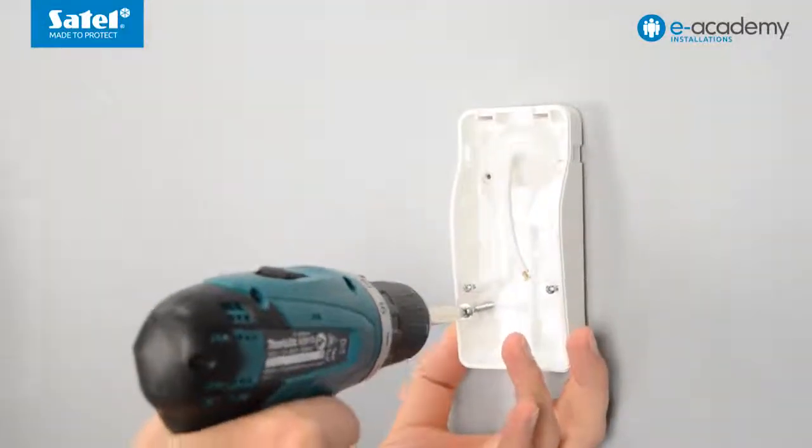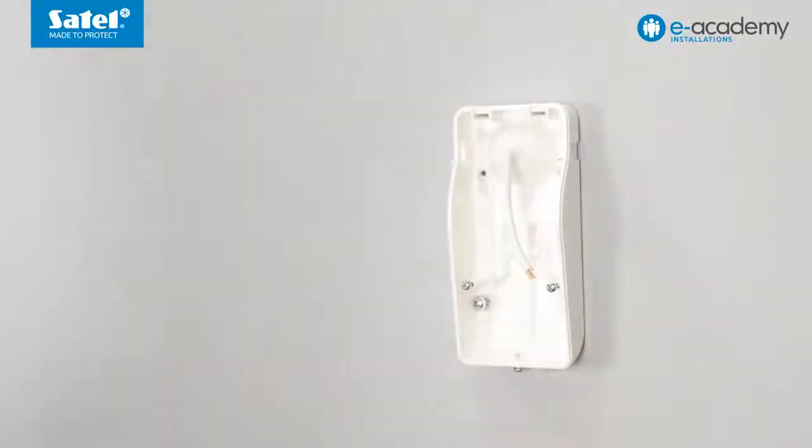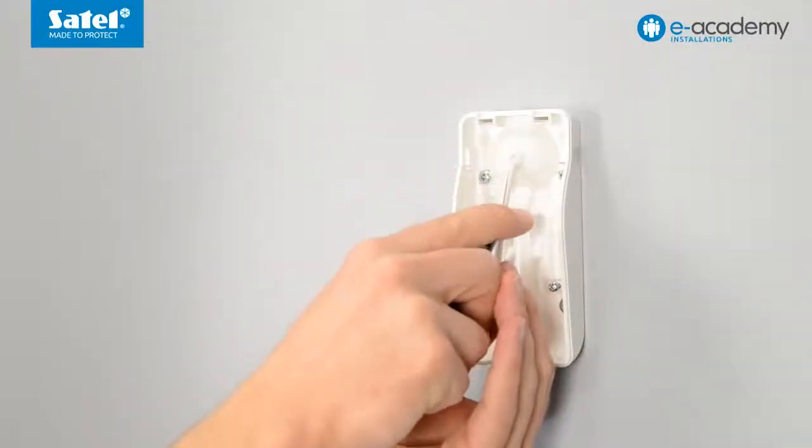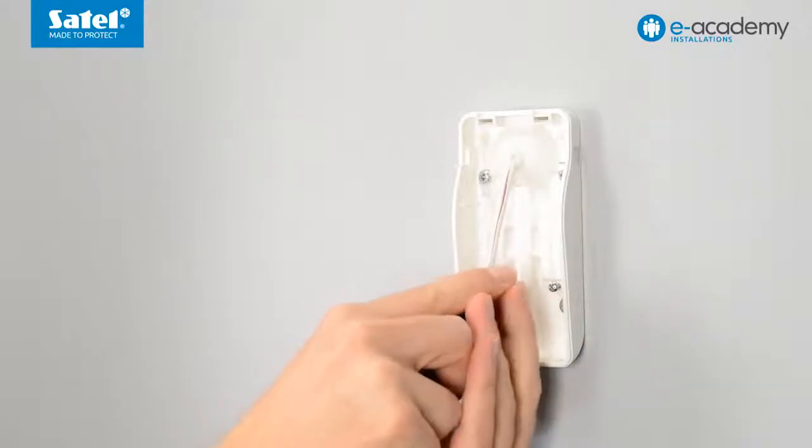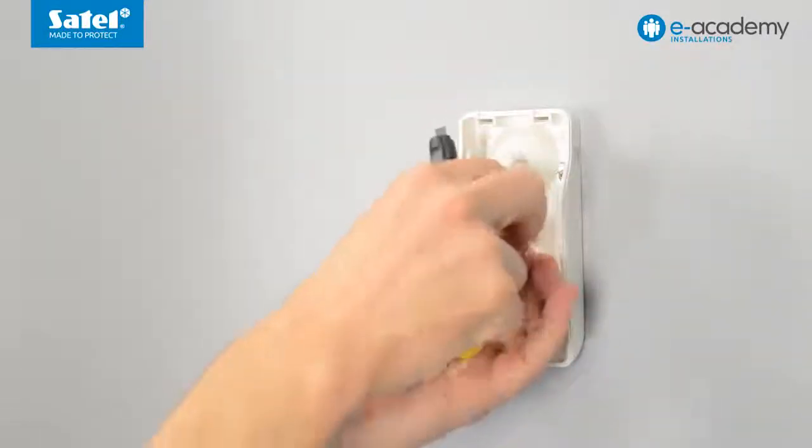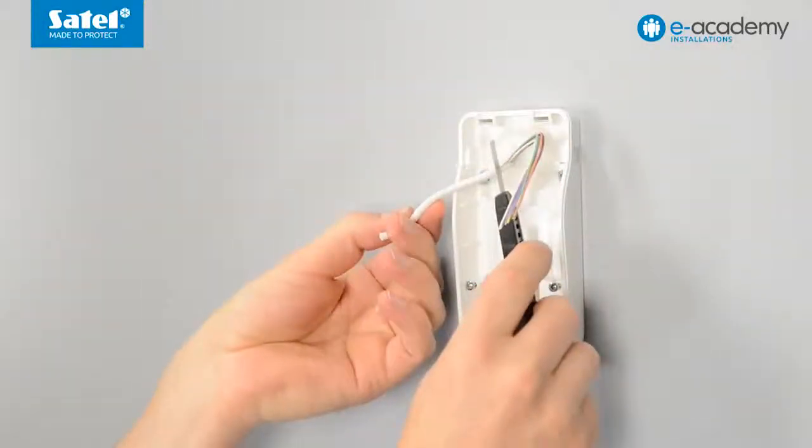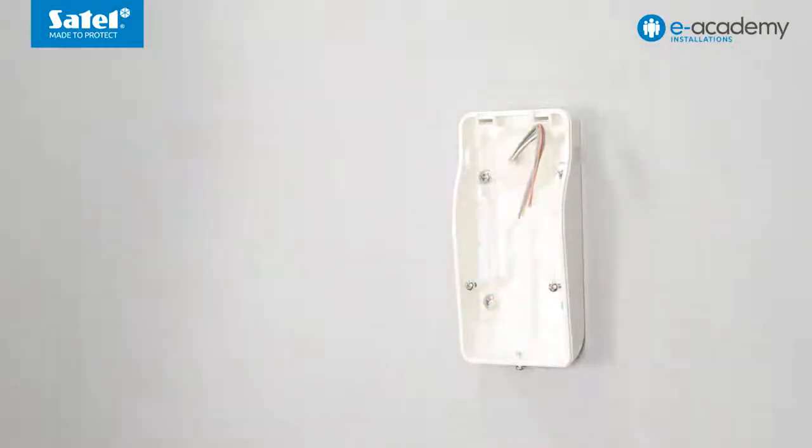Secure the enclosure base to the wall using the drill driver and screws. Cut off the unnecessary portion of the cable jacket.